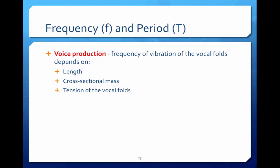With voice production, the frequency of a person's voice depends on the length of their vocal folds, the cross-sectional mass of their vocal folds, and the tension of their vocal folds. Men have lower frequency voices because they have more massive vocal folds. Children have the highest frequency voices because they have the least massive vocal folds. And singers' voices are changed when there are nodules on their vocal folds, which change the mass or the tension of their vocal folds.